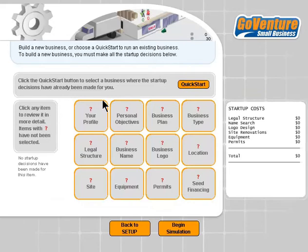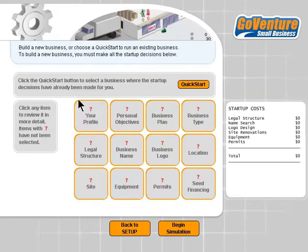We have two options. We can either dive into a quick start — a pre-existing business already set up in the system, one that the designers have created for you. The other option is to start your own business by making all of the startup decisions yourself. There are 12 startup decisions that you can make by clicking on each of the 12 boxes.